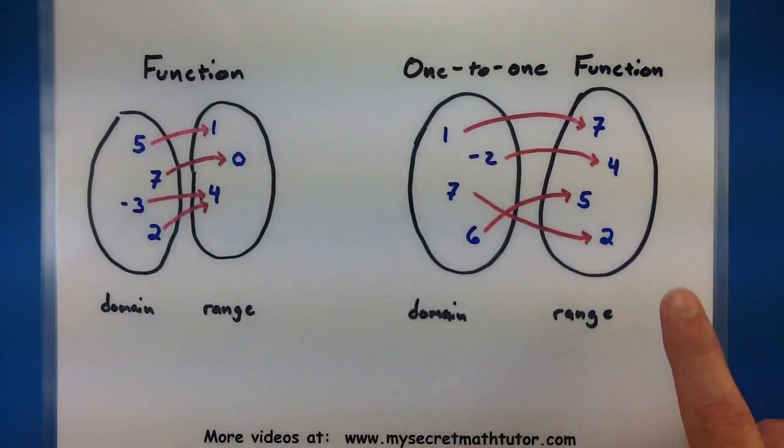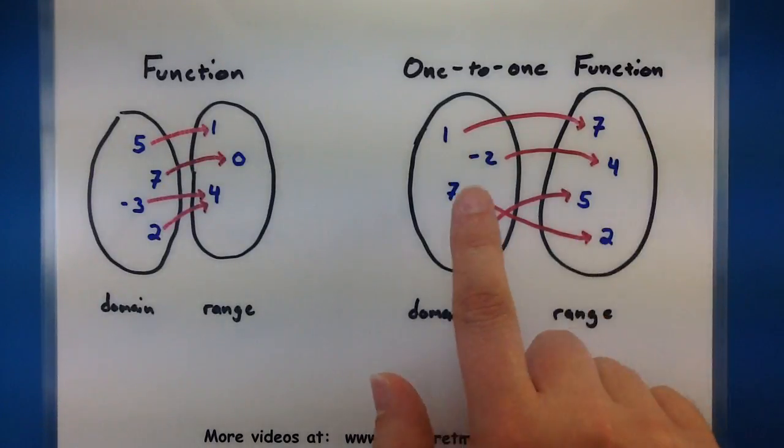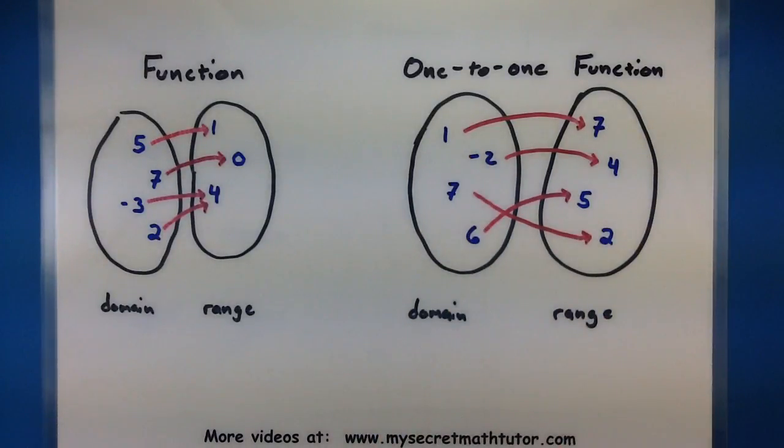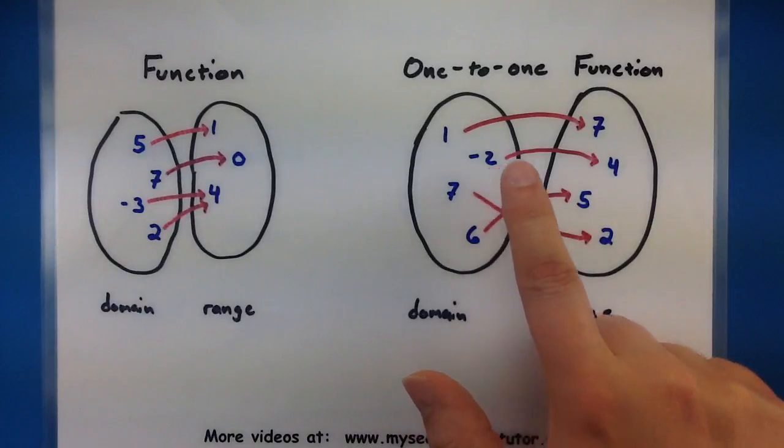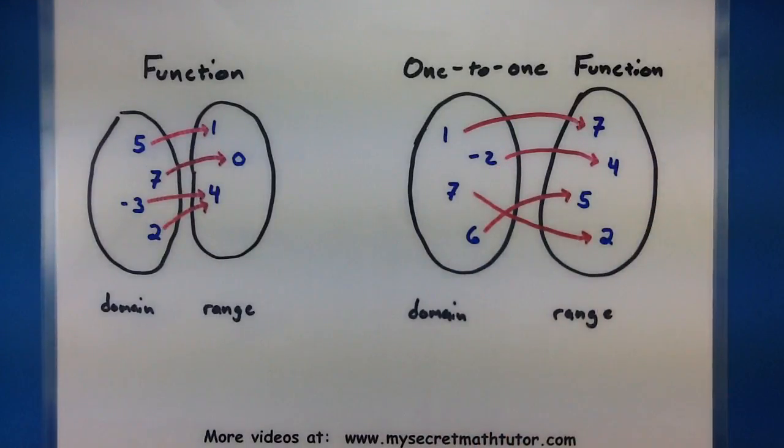Now let's go ahead and turn our attention to this guy over here. And again you notice we have different inputs mapped to different outputs. But every single input only goes to one unique output. That's what makes something a one to one function.